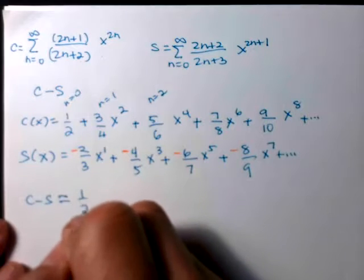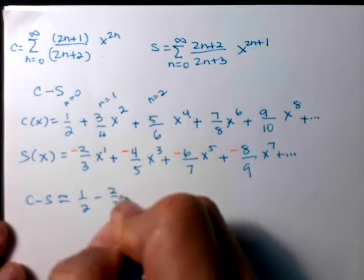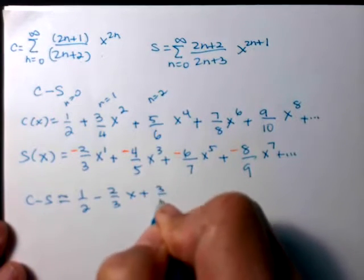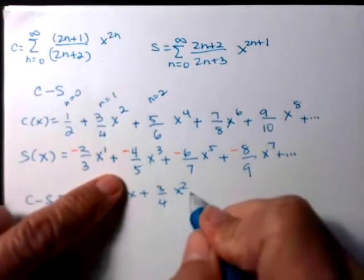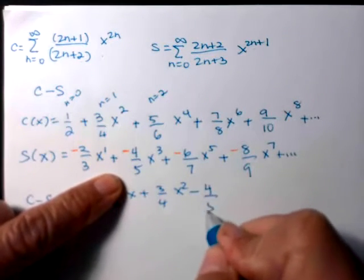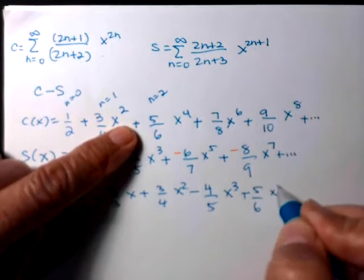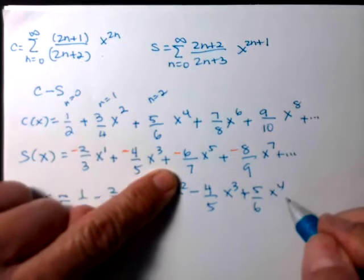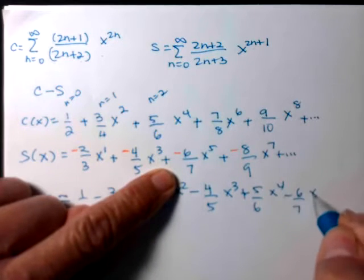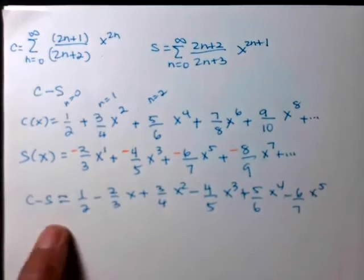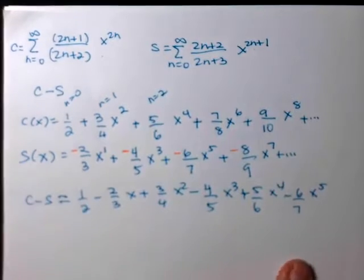I'm going to have 1 half minus 2 thirds x plus 3 fourths x squared, and then I'm on to my x cubed term. So minus 4 fifths x cubed plus 5 sixths x to the fourth minus 6 sevenths x to the fifth. Okay, I'm going to stop, and now let's look here and see if we see that pattern.